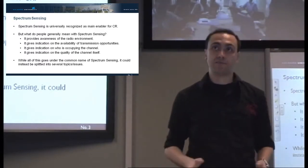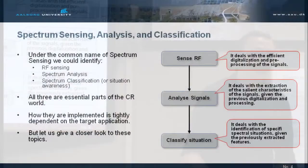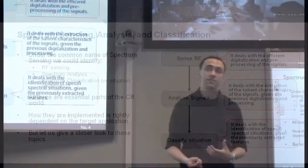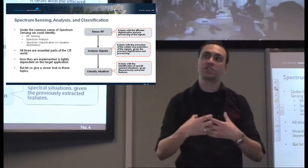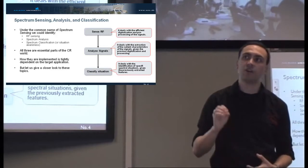Spectrum sensing can be split into several subtopics, each addressed in different ways. Personally, I see three main branches. The first is RF sensing — basically taking the electromagnetic wave into the digital domain. Once you have the digital signal, you need to analyze it and extract the main characteristics. Once you process the signal, you can classify the situation — that's what I call the proper indication of environmental awareness.